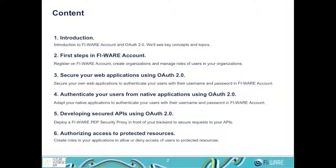Then we will do the same from non-web applications — we can call them native applications — using the same standard and same components. In class number five, we will also change the backend of our application to secure requests to our APIs, so that only apps used by authenticated users will be able to make requests to our service. And finally, we will also authorize access to our resources, using the roles in FIWARE account to define who is allowed to access more restricted resources.